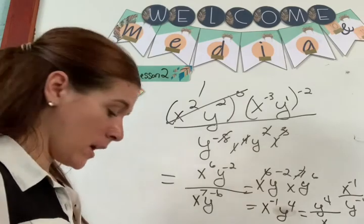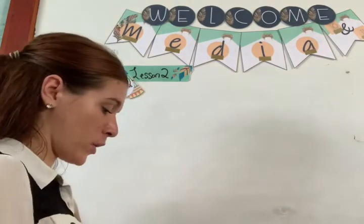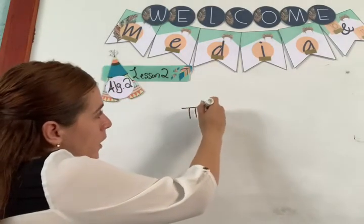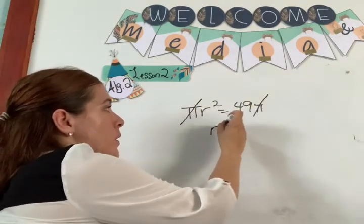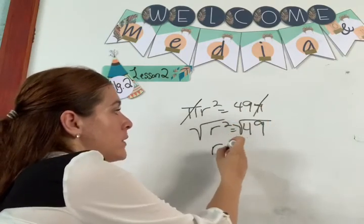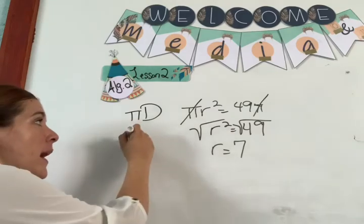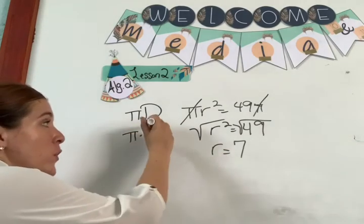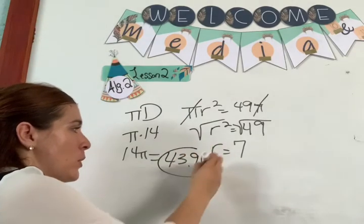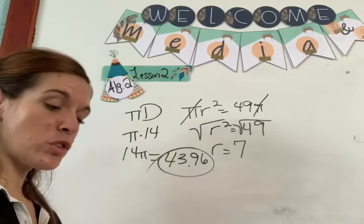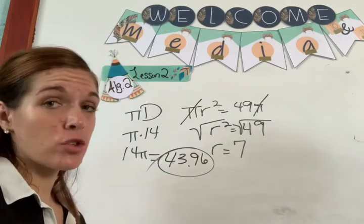Letter D: the area of a circle is 49 pi. Write the formula: pi r squared equals 49 pi. Cancel out pi — r squared equals 49. Square root that: r equals 7. Then the problem asks for circumference. Write the circumference formula: pi D. That's pi times 7 times 2, which is 14 pi, or multiply it out and you get 43.96. There are all your answers. Have fun with lesson 2, let me know if you need any help!